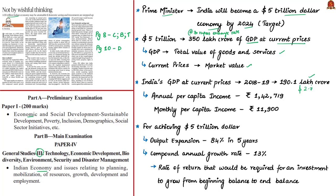The annual per capita income — the average income earned per person in our country — is Rs. 1,42,719, or about Rs. 11,900 per month. To achieve this $5 trillion target, we have to have an output expansion — that is, to increase production by 84% in the next 5 years, or at 13% compound annual growth rate. The compound annual growth rate means the rate of return required for an investment to grow from its beginning balance of $2.8 trillion to the ending balance of $5 trillion.